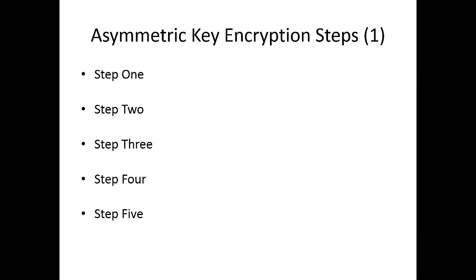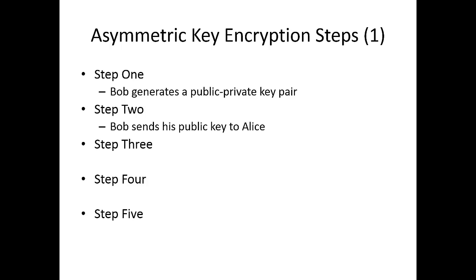In summary, this is how asymmetric encryption works step by step. Step one is Bob generating a public-private key pair. He keeps the private key to himself and distributes the public key to anybody who wants to send an encrypted message to Bob. Step two is Bob sending his public key to Alice so that Alice can use that public key to encrypt a message for Bob. Step three is Alice encrypting her message using Bob's public key.